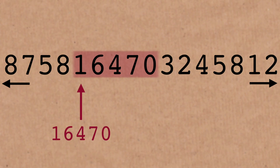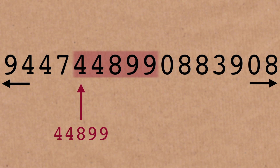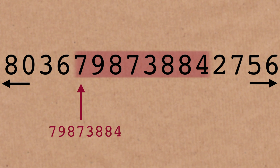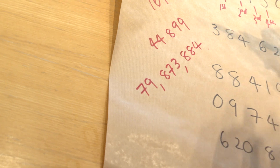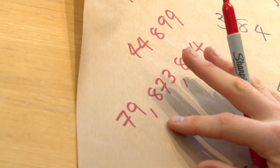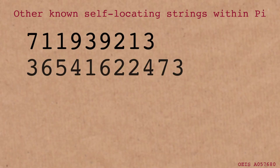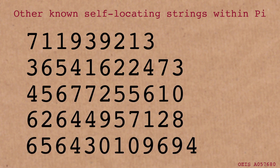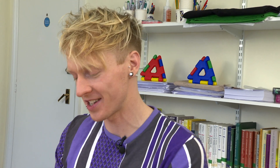I'm definitely not writing out 16,000 digits of pi — that's a job for the viewer. After 16,470 we jump up to 44,899, and then the big one at 79,873,884. So that's our first at position 1, second at 16,000, third at 44,000, and fourth self-locating string at 79 million. Would you guess there are an infinite number of these? I'm inclined to say yes — pi is an infinite string, but you've got the extra condition that the number must appear in a specific place, so that's why these are quite rare.